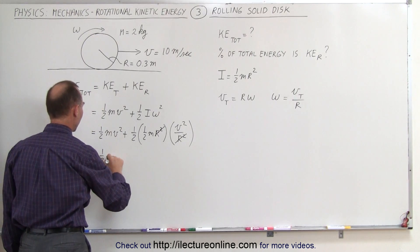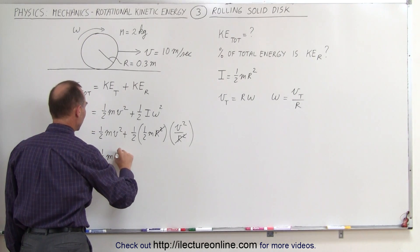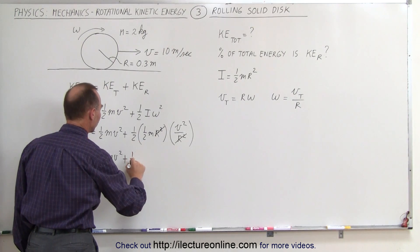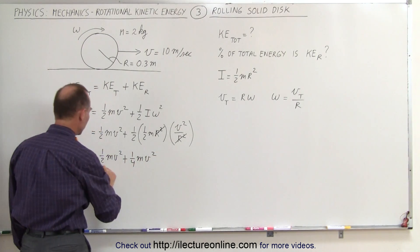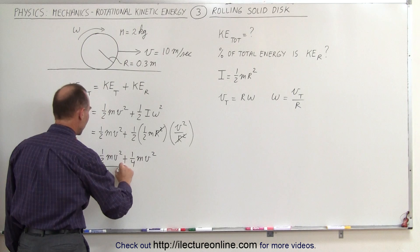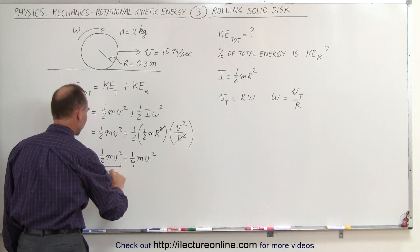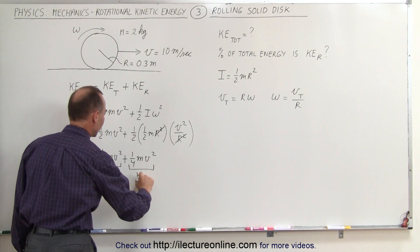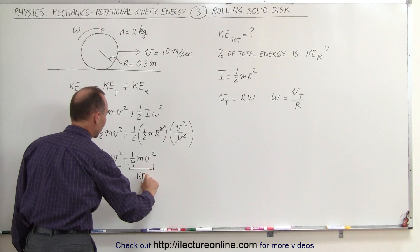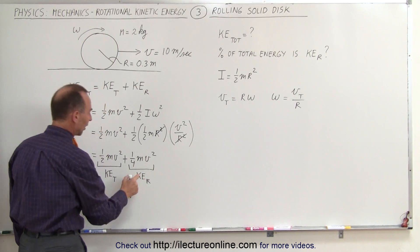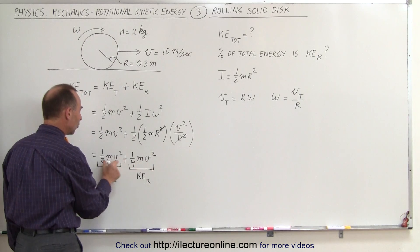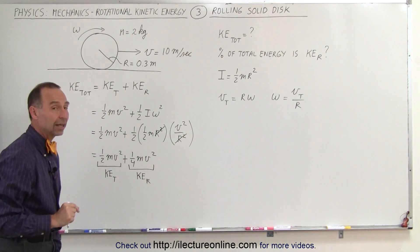Now we get one half mv squared plus one quarter mv squared. The first term is the translational kinetic energy and the second term is the rotational kinetic energy. Notice that the rotational kinetic energy in this case is half the translational kinetic energy.